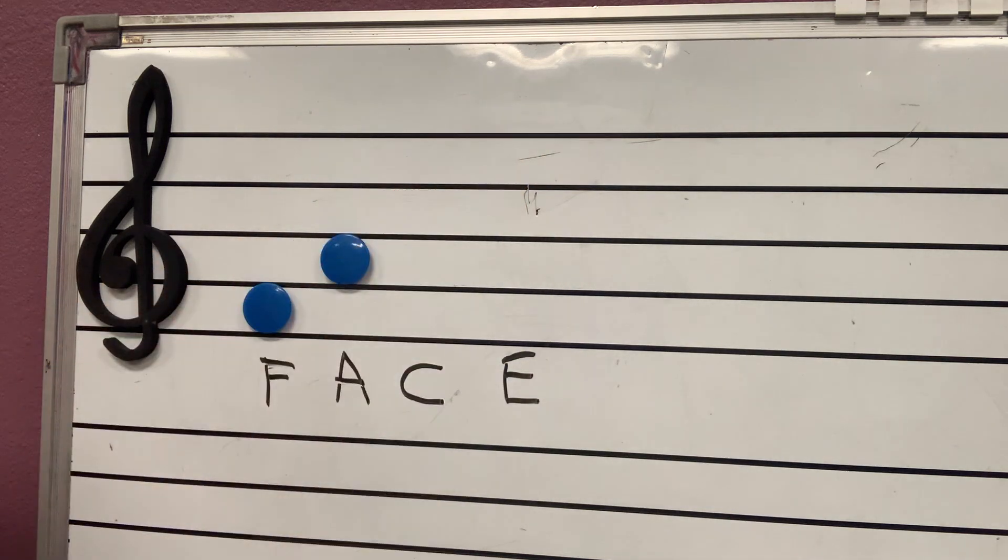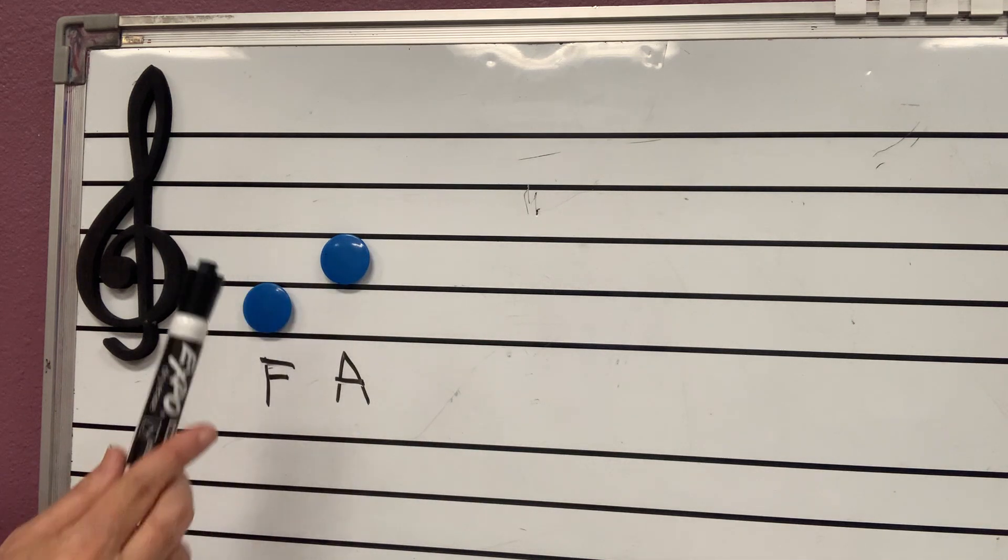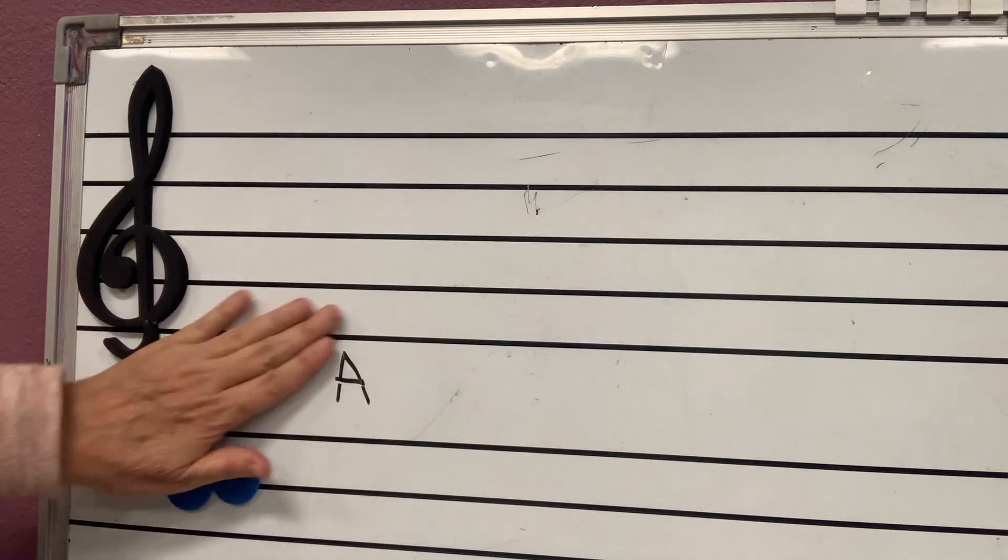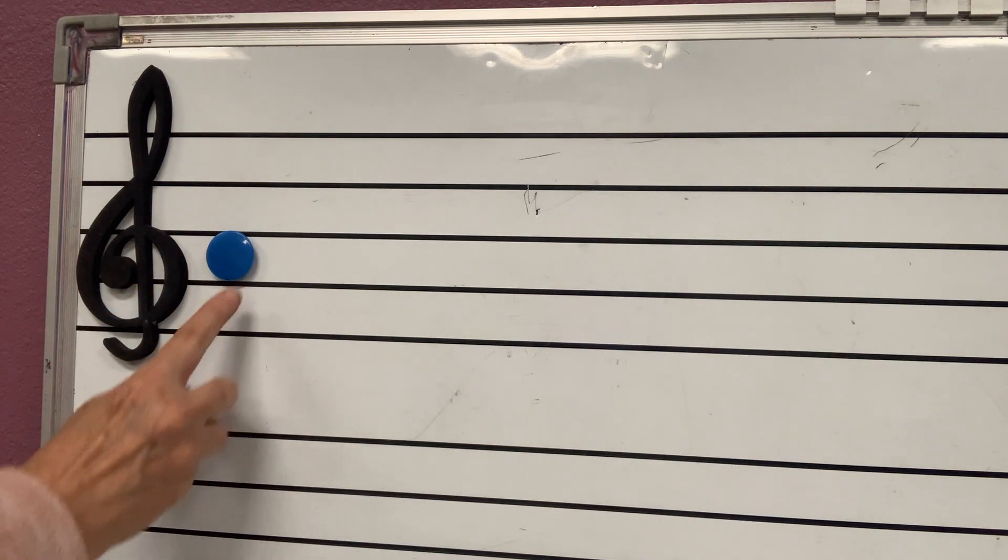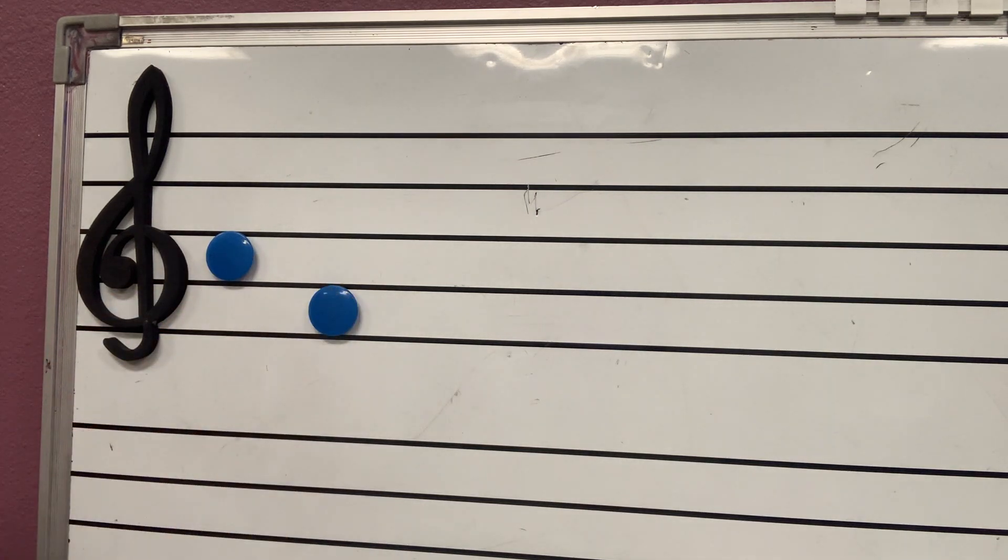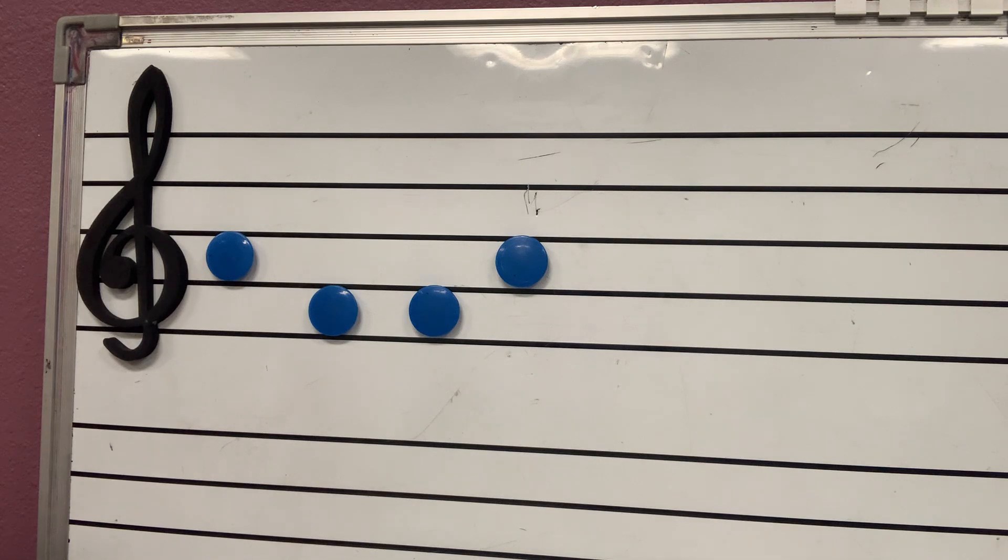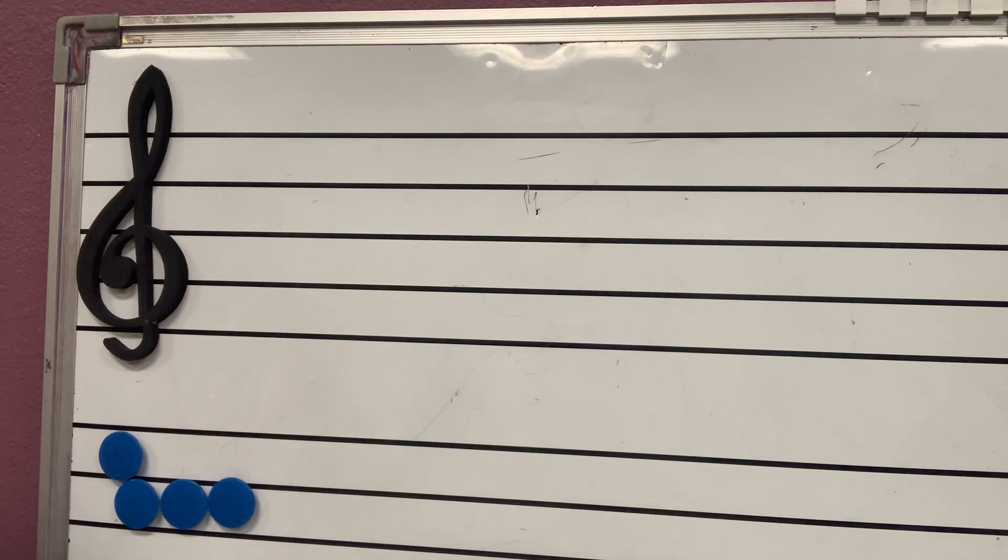Now, forget about the C and the E. Right now, all I want you to be good is at F and A. We know that the first space is F. The second space is A. That's all you have to remember. F-A. So be very fast for me, okay? Who's this one? A, F. So if it's a space, all you can think of is F or A. Now, let's see if we can mix them, okay?